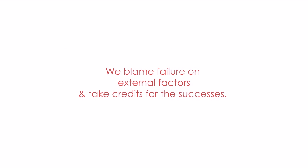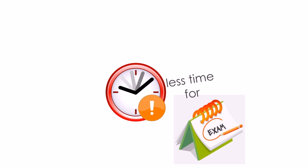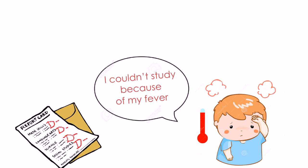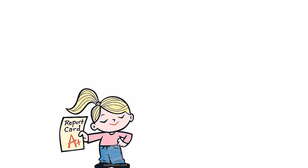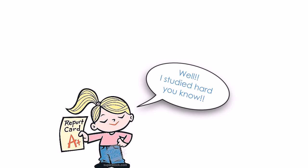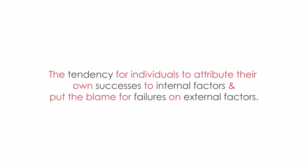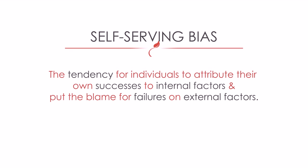We also blame failure on external factors and take credit for successes. For example, you might blame having less time to study or a mild fever if you score poorly on an exam. But if you score well, you take all the credit and talk about how hard you worked. We accept positive feedback while rejecting negative ones. This tendency to attribute successes to internal factors and failures to external factors is called self-serving bias.